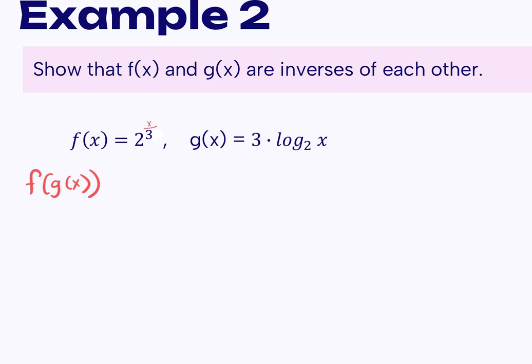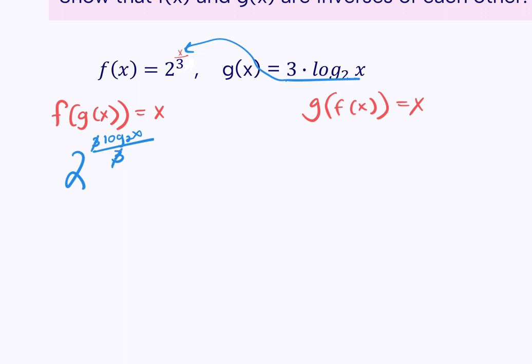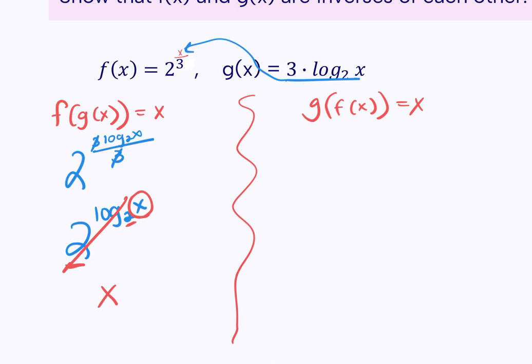We're doing f(g(x)) and g(f(x)); the goal is to get x. For the first one, we're plugging g into the exponent of f: 2^(3 · log base 2 of (x/3)). The 3's cancel — multiplying and dividing. We get 2^(log base 2 of x). When the base of the exponent matches the base of the log, they cancel and leave just x. Every composite function of inverses results in x.